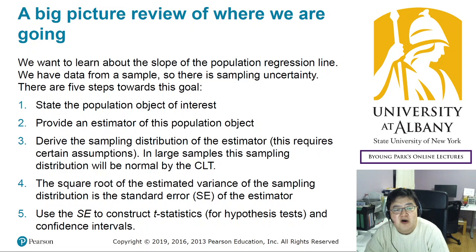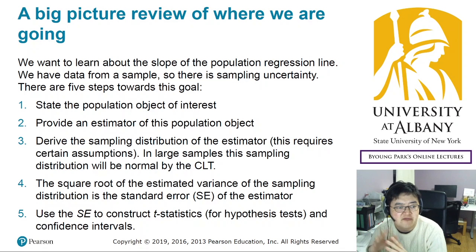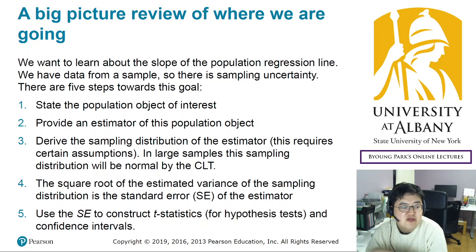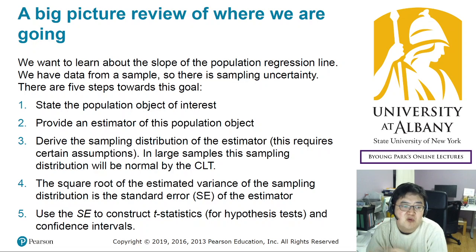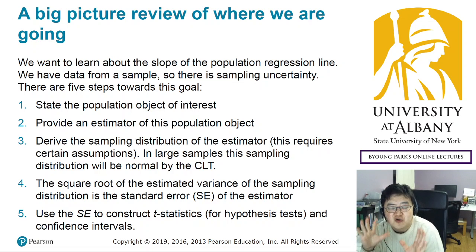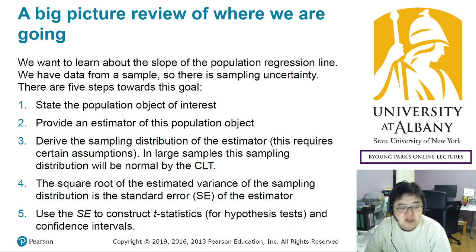You do not need to memorize the formula, but you need to understand how it works. The main idea is that the mean is consistent, but the variance decreases at the rate of one over n. So as the sample size increases, the variance goes to zero. Then based on the sampling distribution, we could calculate the standard error. We also defined R-squared — another measure that captures how well your regression model is explaining the outcome variable. So that's what we have done in chapter 4.